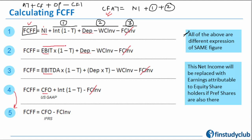The equation starting from EBIT has: first adjustment — make it after-tax; second adjustment — convert accrual to cash. It does not need to add back interest because the starting point is already operational. Mathematically, there's no point adding back interest if it hasn't been deducted. EBIT means earnings before interest and tax — interest hasn't been deducted, so no need to add it back. This is the same indirect method logic from cash flow from operations.